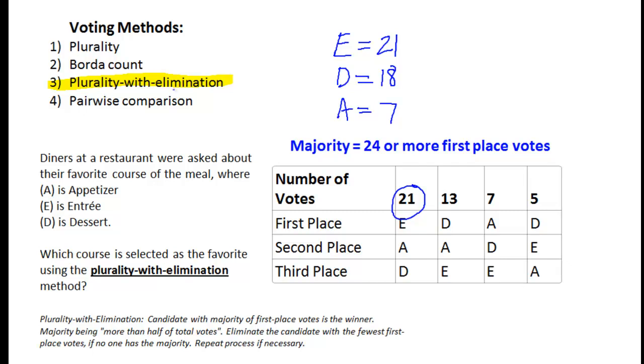So this plurality with elimination method says all right, well if nobody is the clear winner right now then we're going to eliminate. That's the whole point. We're going to eliminate the one that has the least number of first place votes. In this case that's appetizers. So we're going to move over here and we're going to say all right, well if I'm going to eliminate appetizers down here in this table, that means that everywhere I see an A, I'm going to cross it out.